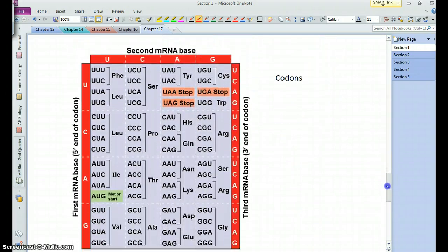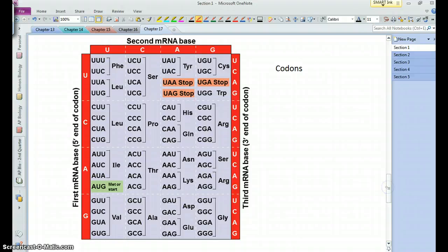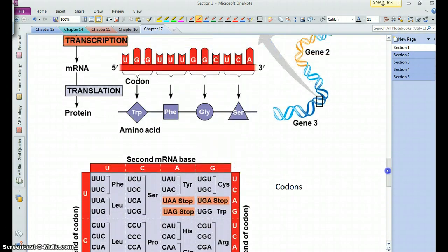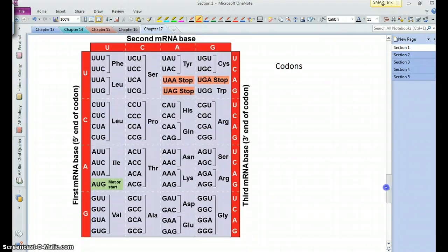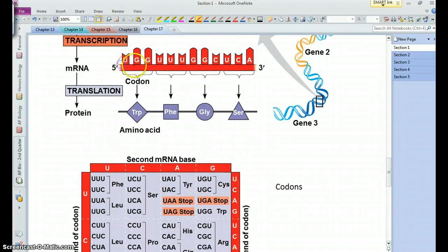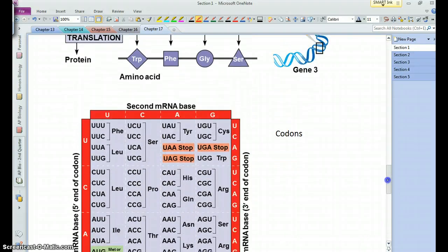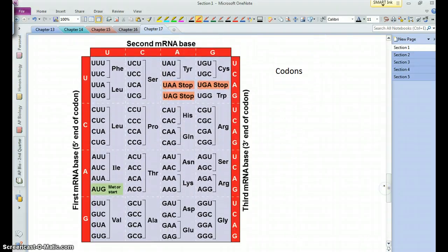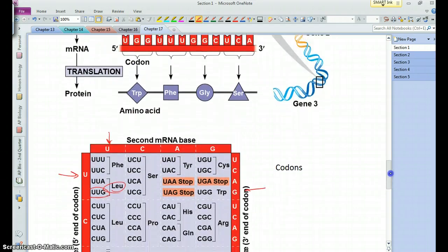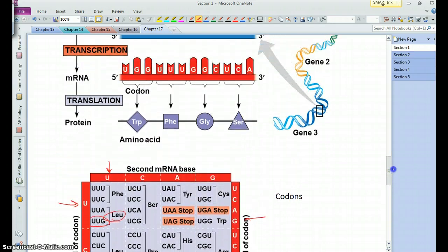And each codon is responsible, or most codons are responsible, for a particular amino acid. So for example, we see UGG, and notice in a codon there's the first, second, and then third base. And so when we look at our genetic code, we see - what is it again? - UGG. So here's our first, right here U, our second G, and our third G. So UGG, that codes for tryptophan.